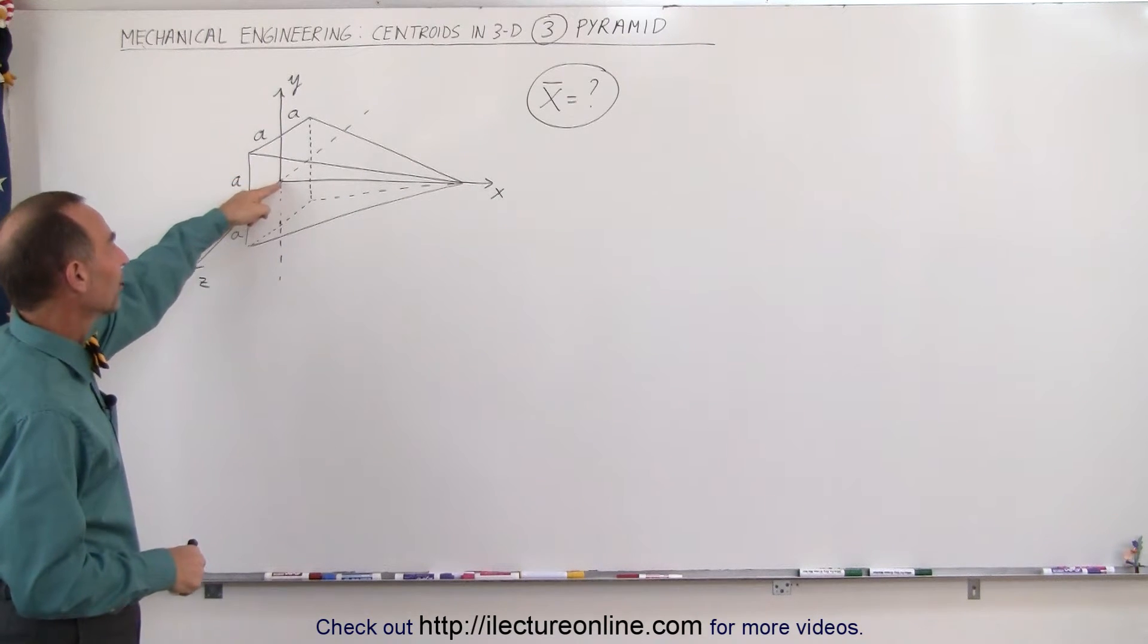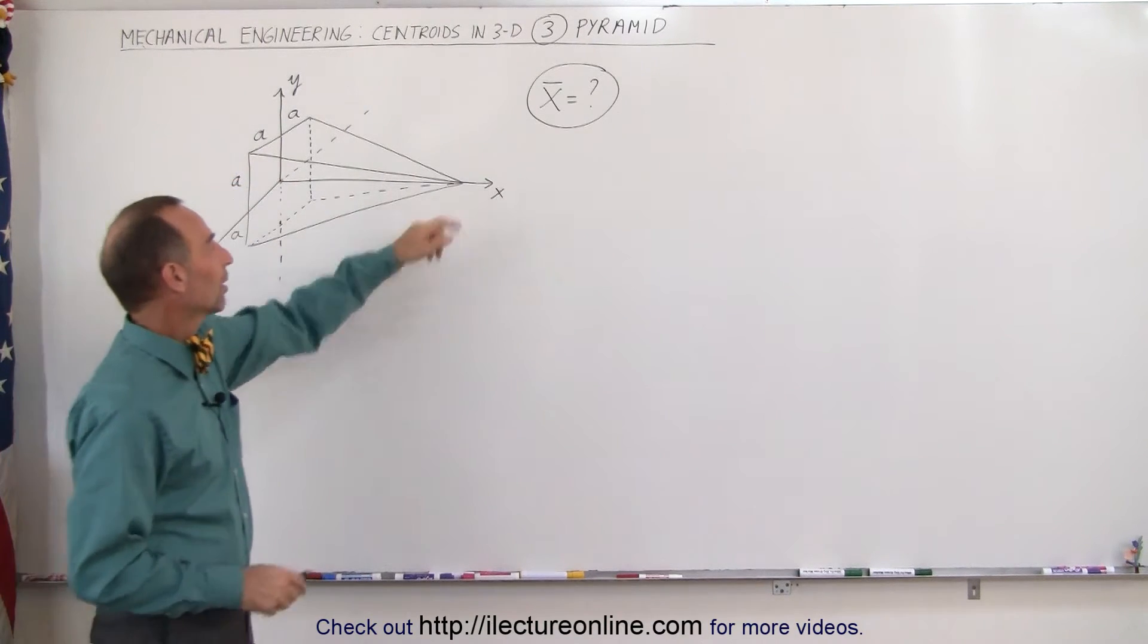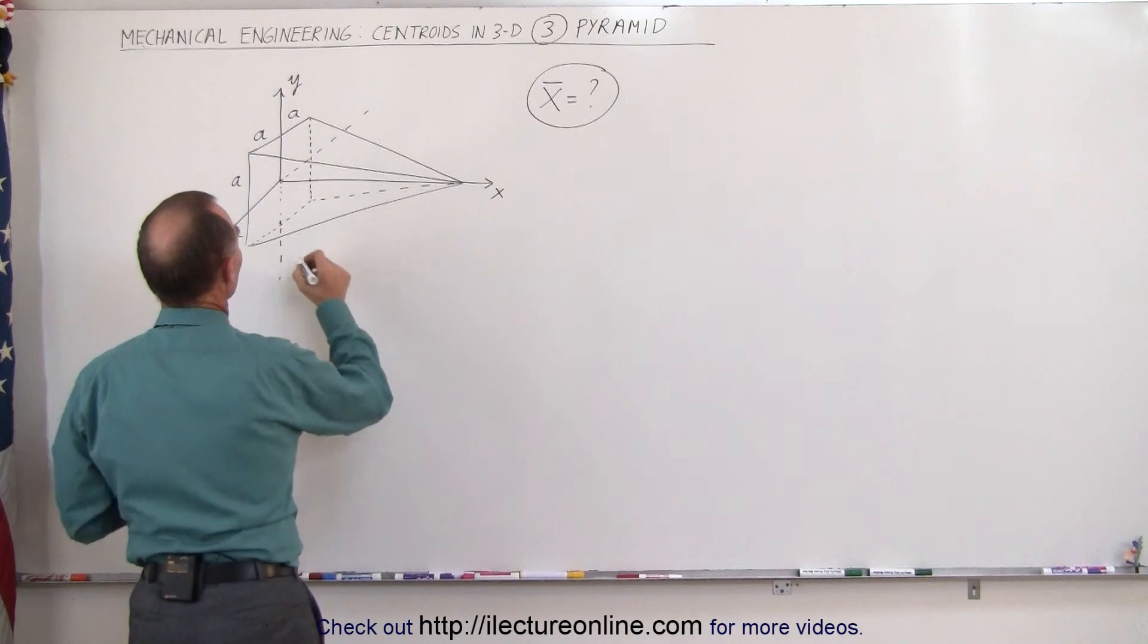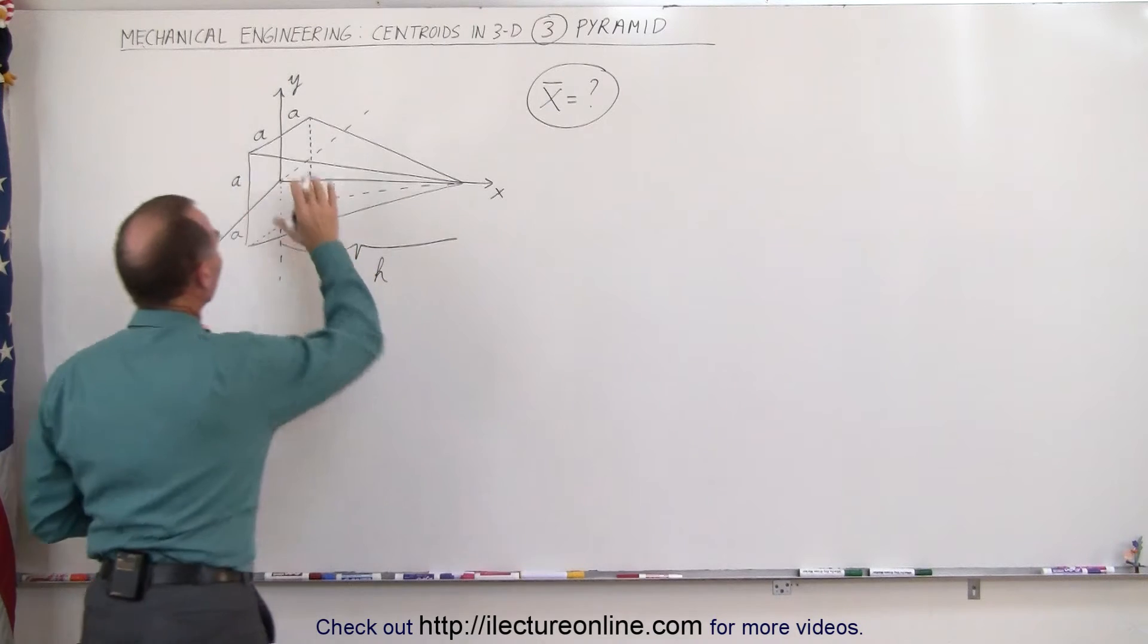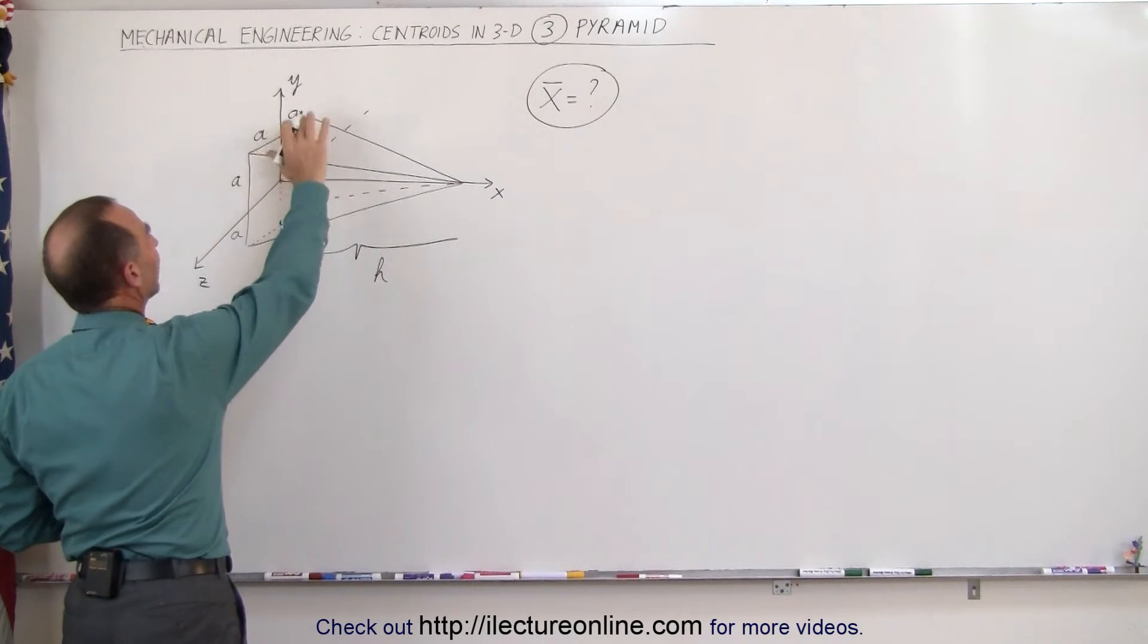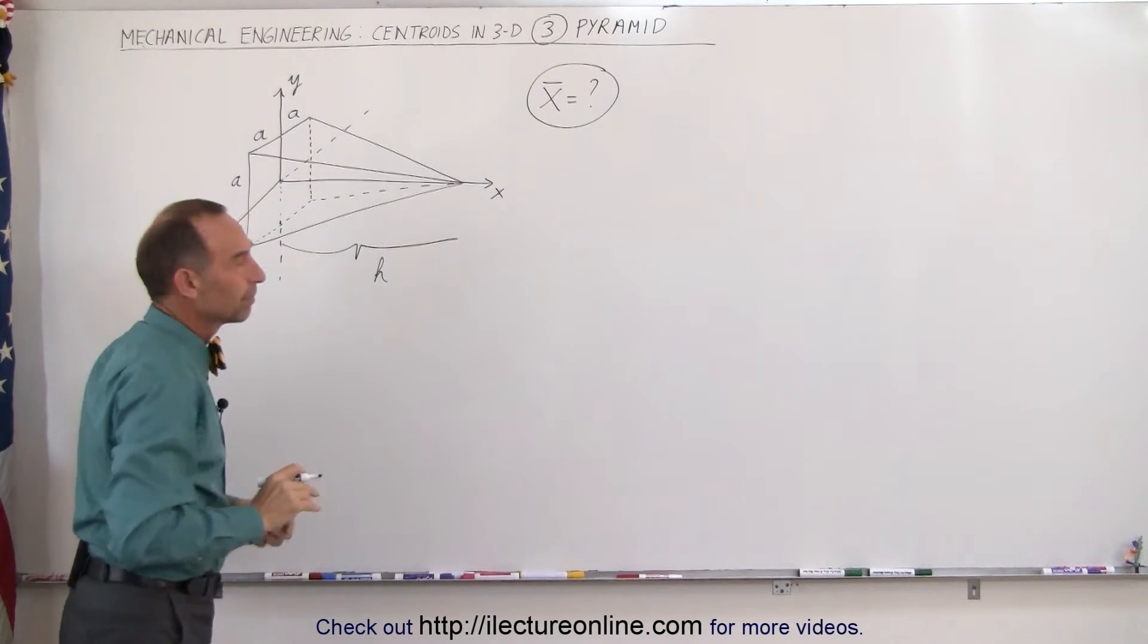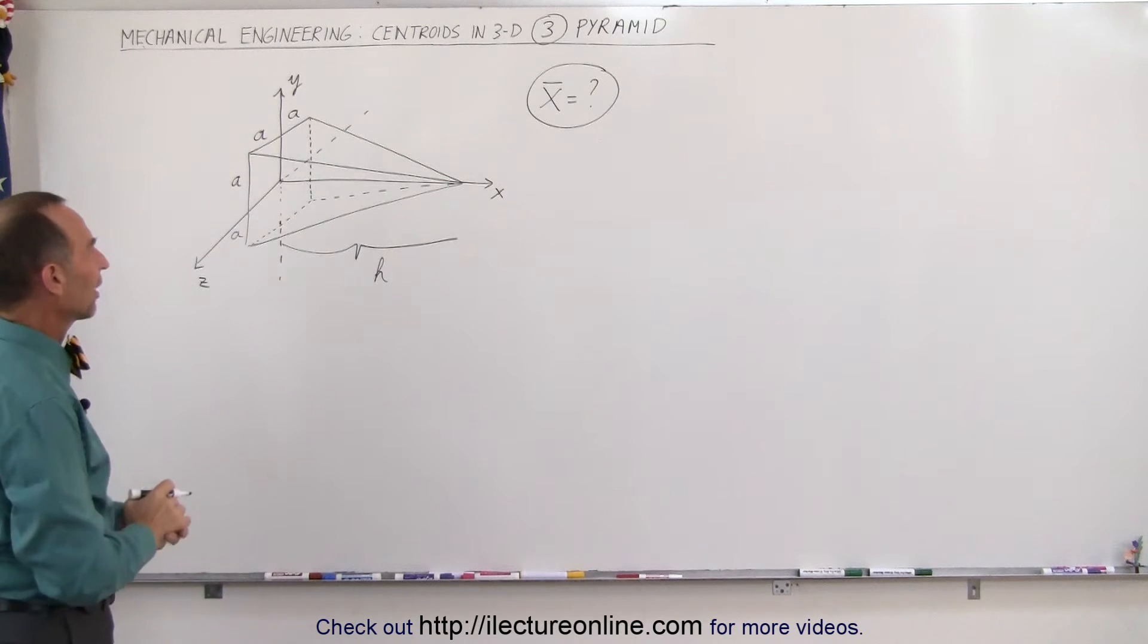Notice we have the base here centered at the origin, and here's the tip. Let's say that the height of the pyramid is equal to h. And you can see that the base of the pyramid is 2a by 2a. It makes it a little bit easier to figure out the centroid.